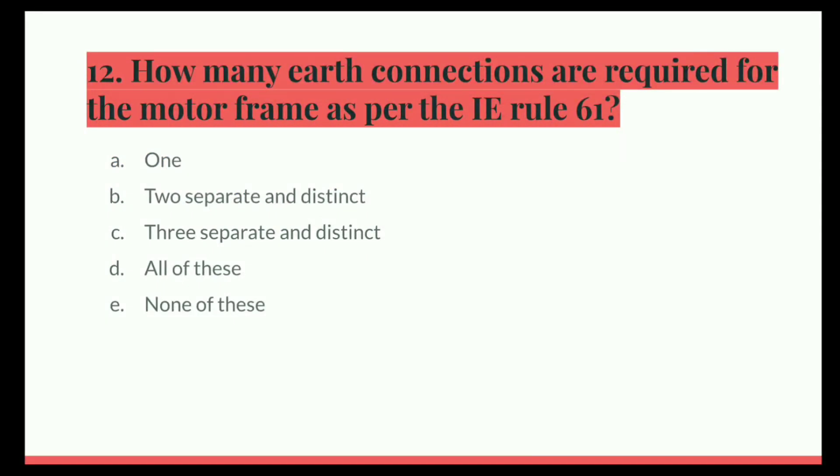Next question. How many earth connections are required for the motor frame as per the IE Rule 61? Option A, 1. B, 2 separate and distinct. C, 3 separate and distinct. D, all of these. E, none of these. The correct answer is 2 separate and distinct.